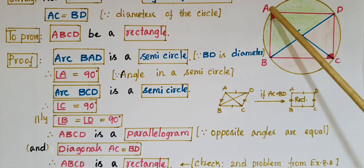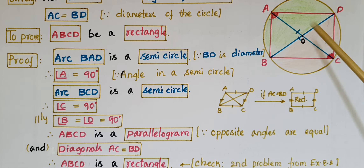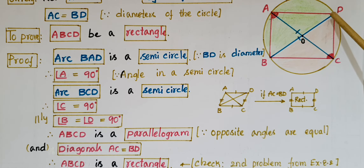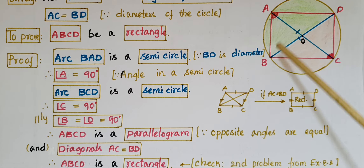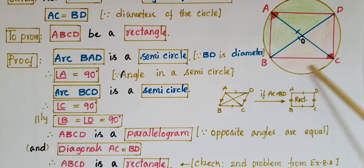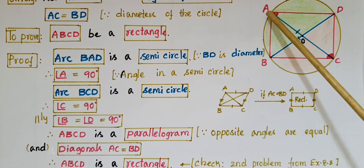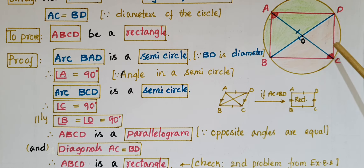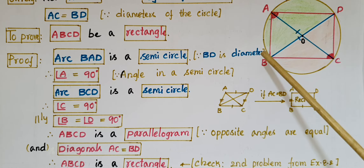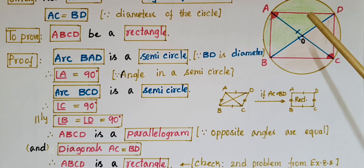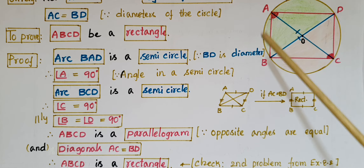Similarly, if you take arc ADC, AC is a diameter, so this is a semicircle and angle D is equal to 90 degrees. And if you take the corresponding arc, angle B is equal to 90 degrees. So, angle B is equal to angle D is equal to 90 degrees. Therefore, opposite angles: angle A is equal to angle C is equal to 90 degrees, and angle B is equal to angle D is equal to 90 degrees. Opposite angles are equal here, so ABCD is a parallelogram.